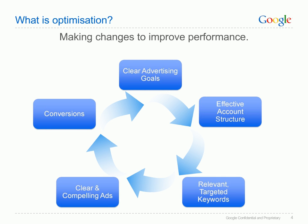It is important to review the account structure to ensure that the campaigns and ad groups are aligned to the website being advertised and are relevant to the product or service being promoted. The keywords chosen must be checked to ensure that they are relevant, cost-effective and targeted. Clear, compelling ad text containing calls to action will increase the click-through rate of ads. And lastly, ensure that conversions online are being tracked effectively.